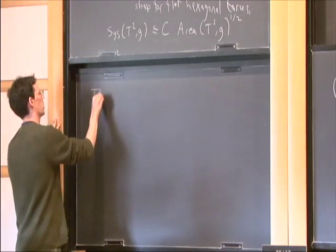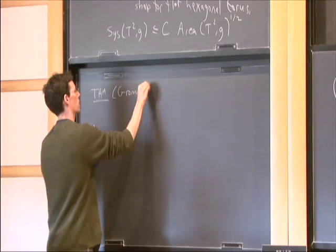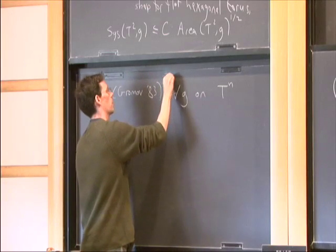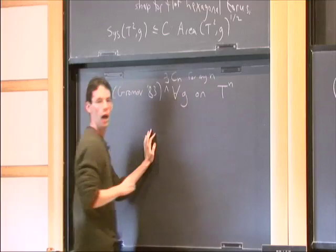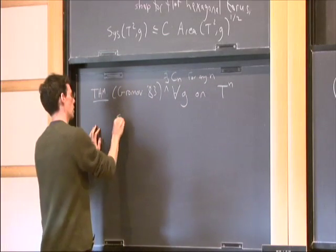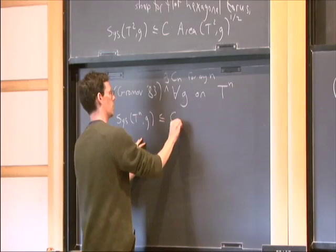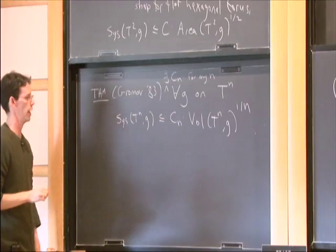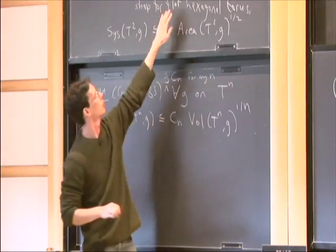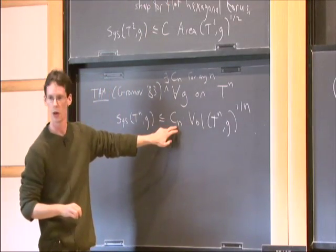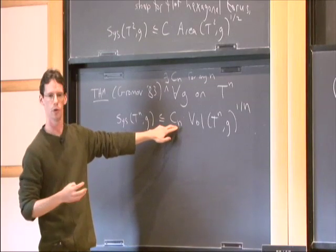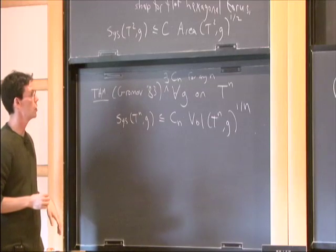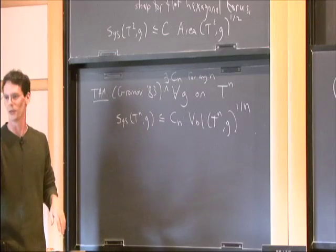Gromov proved in 1983 that for any metric G on an n-dimensional torus, the systole of TnG is less than or equal to a constant C_n times the volume to the power 1/n. The constant C_2 is Lovner's constant from the hexagonal flat torus, and it's sharp. The other constants are not sharp — there's not even a good guess as to what the best constant should be. It's not known whether flat tori are or aren't the best.